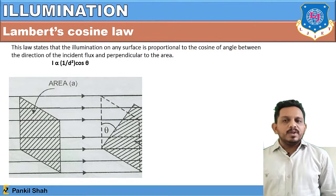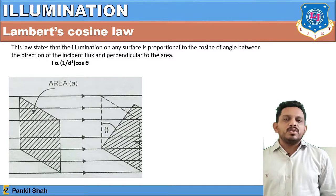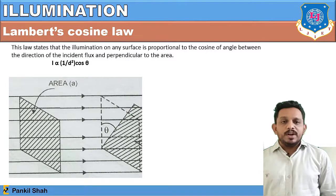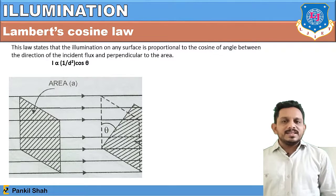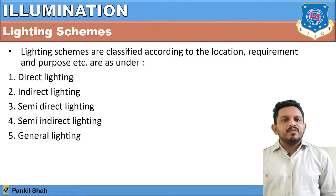Lambert's cosine law states that illumination on any surface is proportional to the cosine of the angle between the direction of the incident flux and the perpendicular to the area. If the source gives illumination at a point and θ is the angle between the incident flux and the perpendicular to the surface, then illumination is directly proportional to (1/d²) × cos θ.